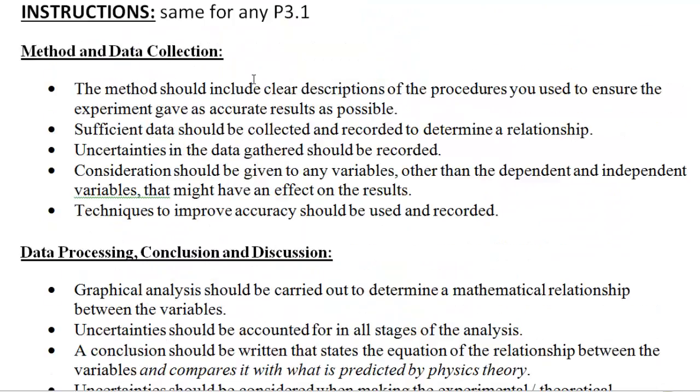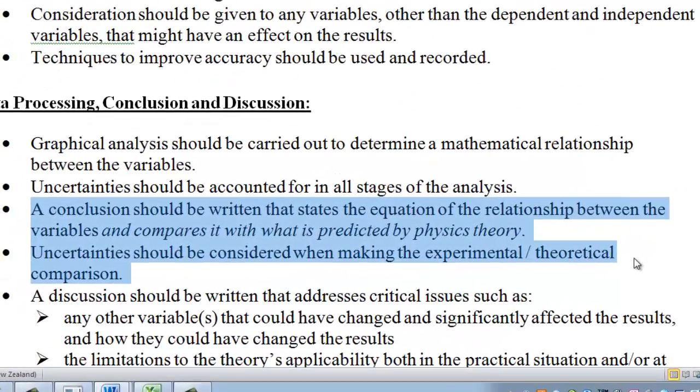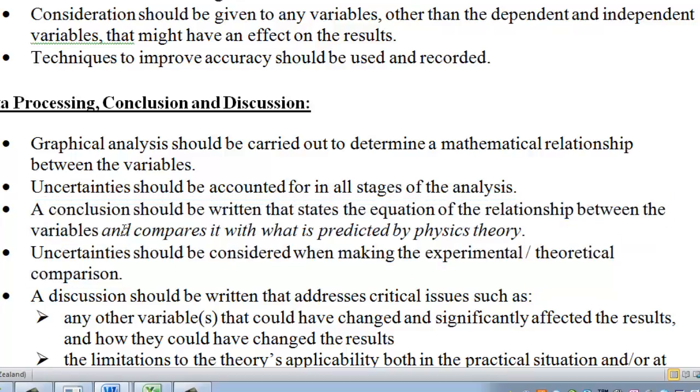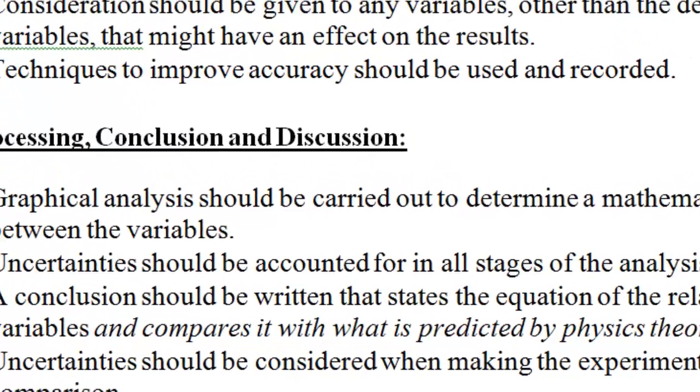Once you get all the way through here, eventually you get to these two bullet points. These are the two bullet points about the conclusion. You can pause that and have a look. One of which is you have to make a comparison between what your equation came out with and what you expected because of the theoretical equation. That comparison is needed to pass. So that's different than level two.